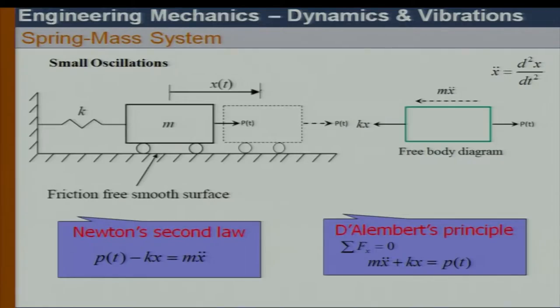When using Newton's second law, we always resolve the moment about the mass center and say resultant moment equals I times alpha — mass moment of inertia times angular acceleration. But with D'Alembert's principle, we do not have to do this. We can take the moment about any point in the body and say sum of moments about any point equals zero.